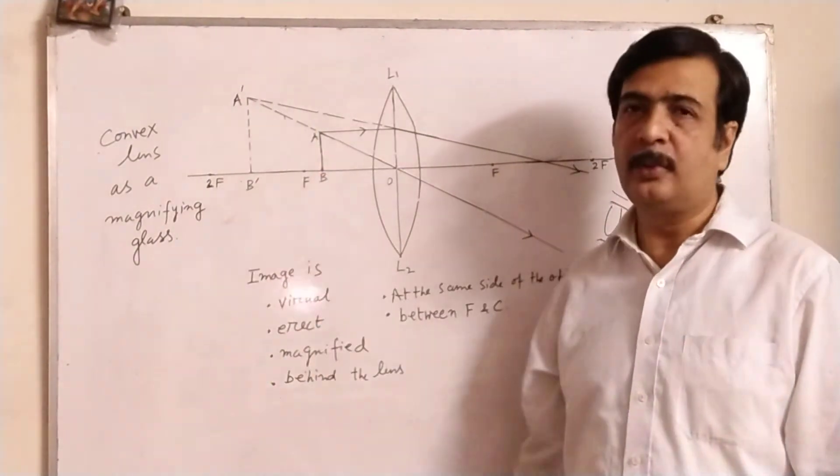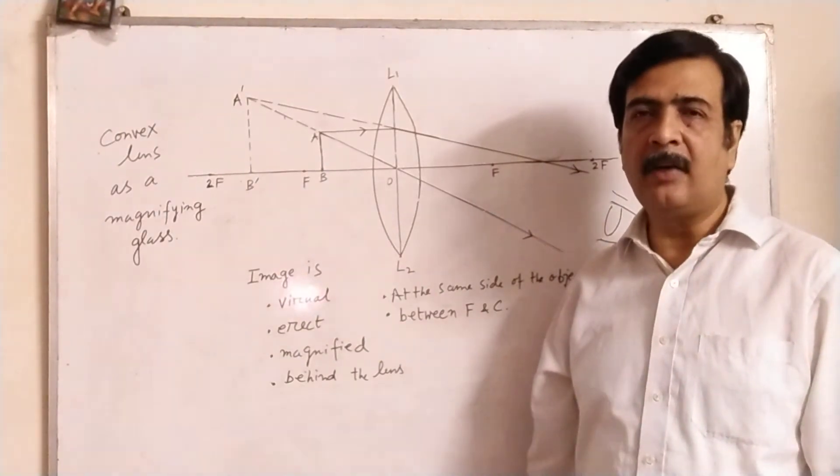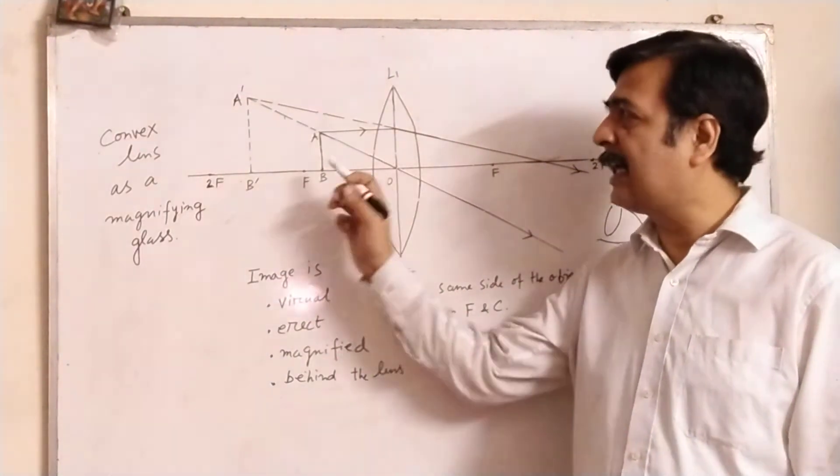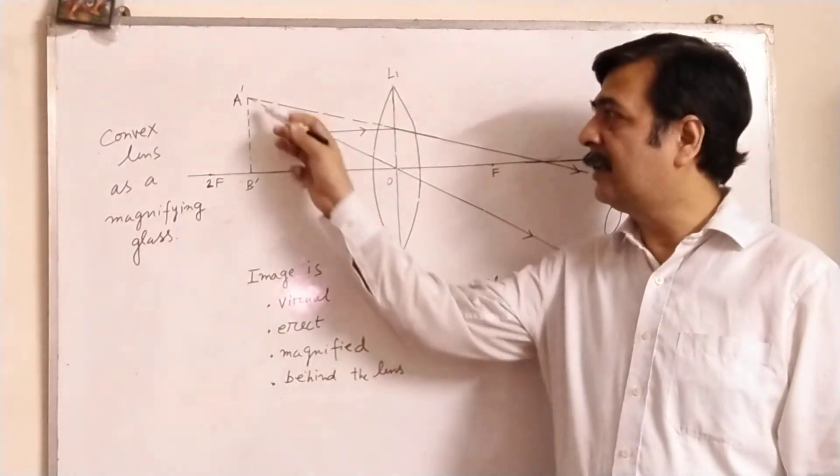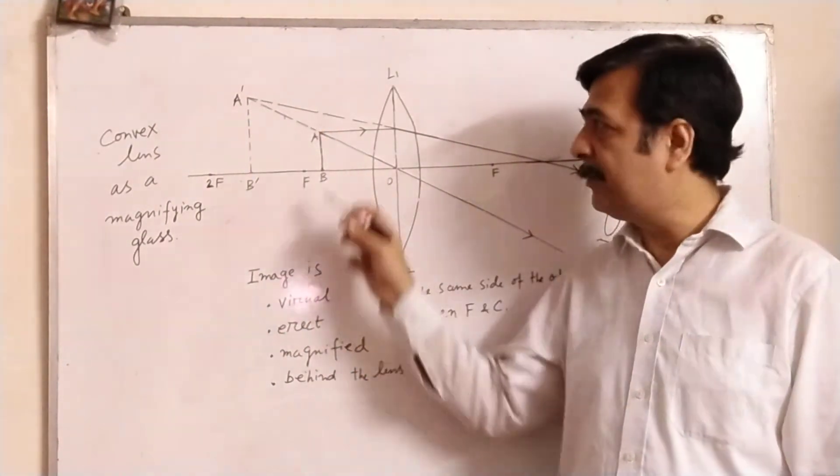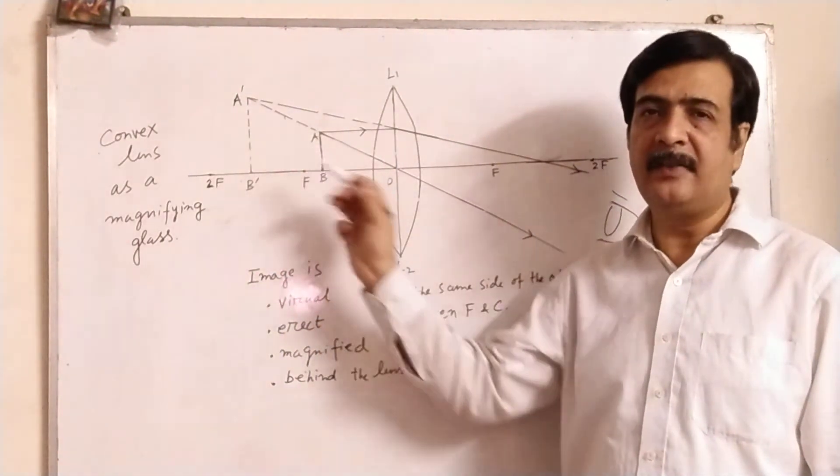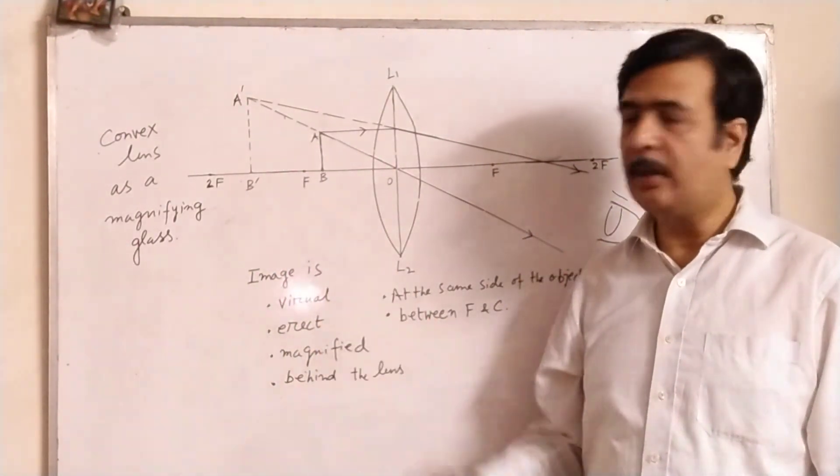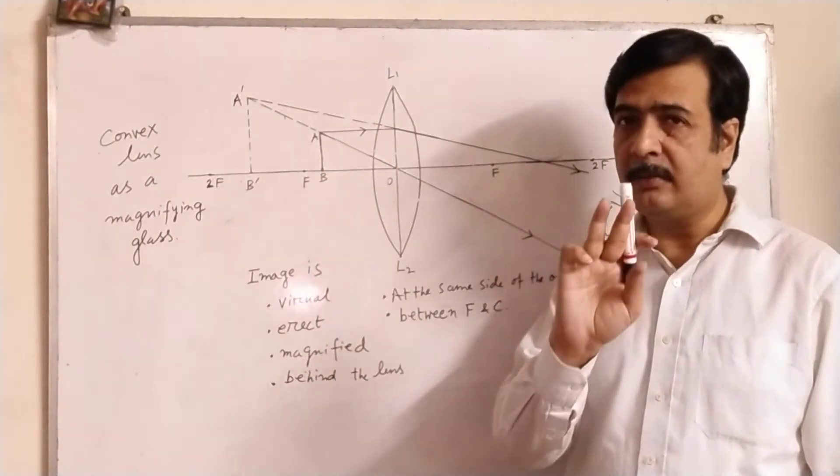So A dash B dash will be the position of the image. Now what is the nature of the image? From the diagram you can easily see that it is a magnified image. A B is the object, A dash B dash is the image, so it is magnified image.